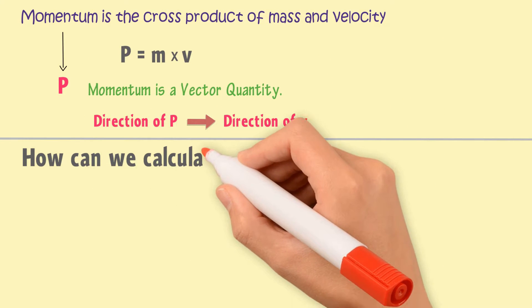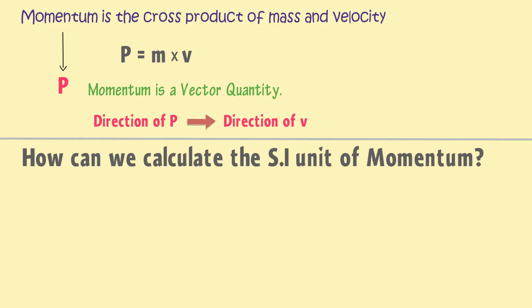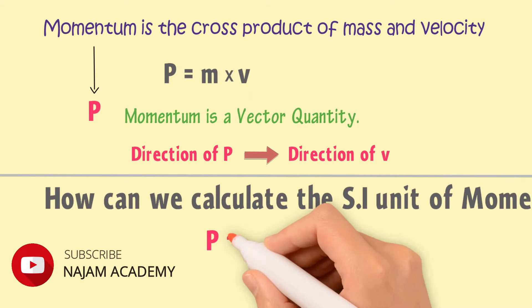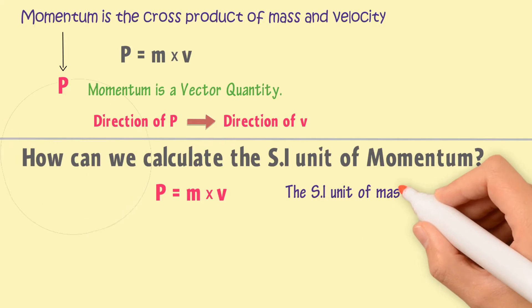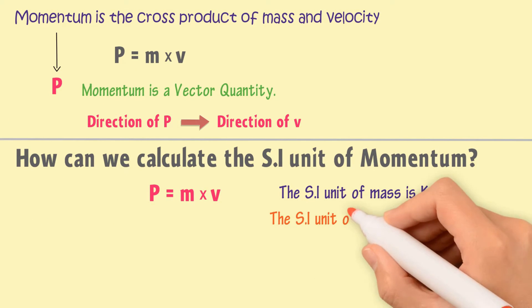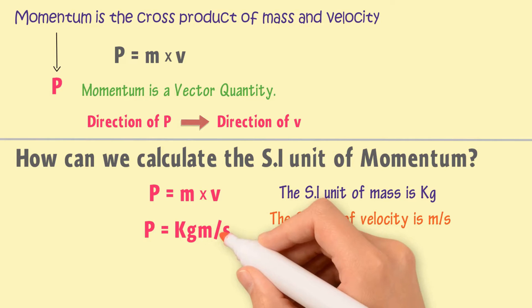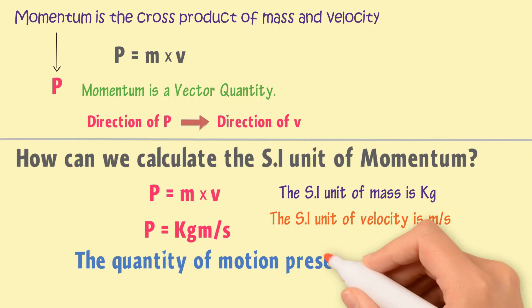Now, how can we calculate the SI unit of momentum? As we know that momentum is equal to mass times velocity, or P equals m times v. The SI unit of mass is kg and the SI unit of velocity is meter per second. Hence, the SI unit of momentum is kg meter per second. This unit of momentum tells us the quantity of motion present in a body or in a mass.